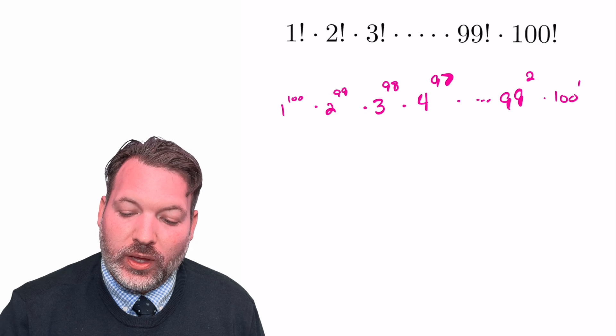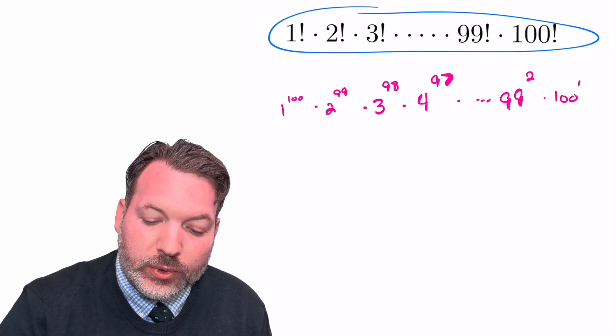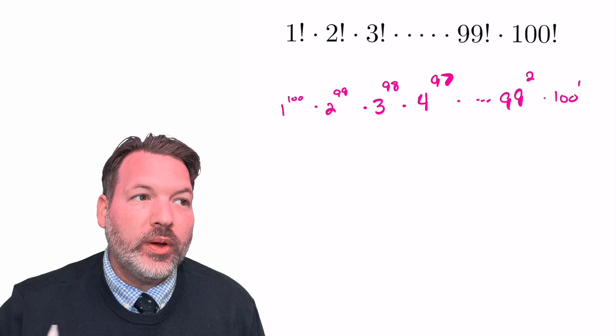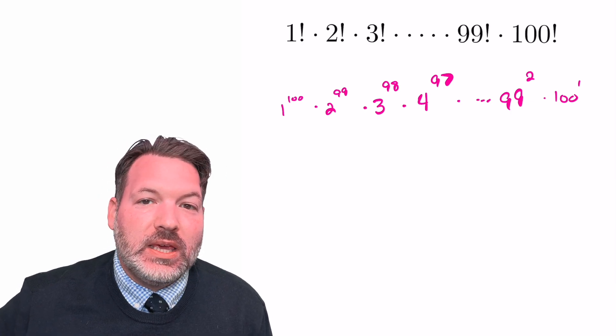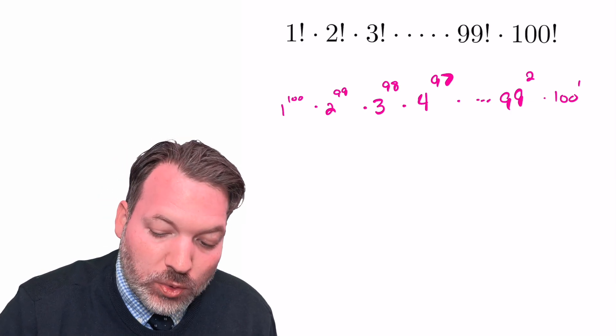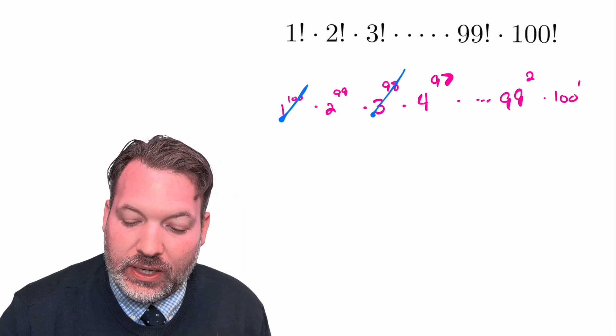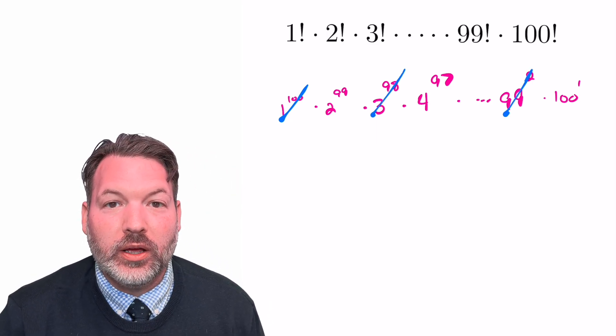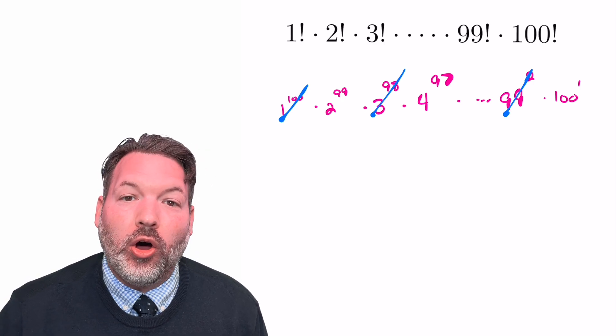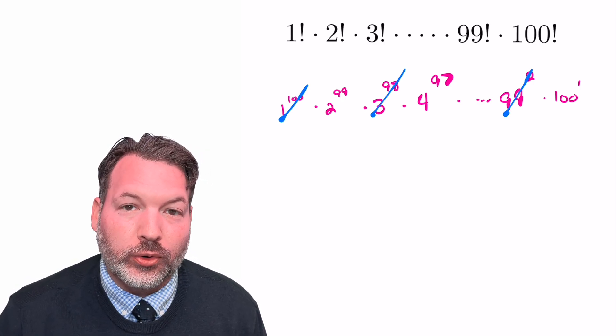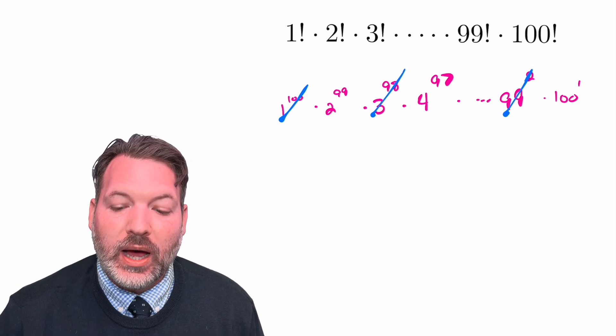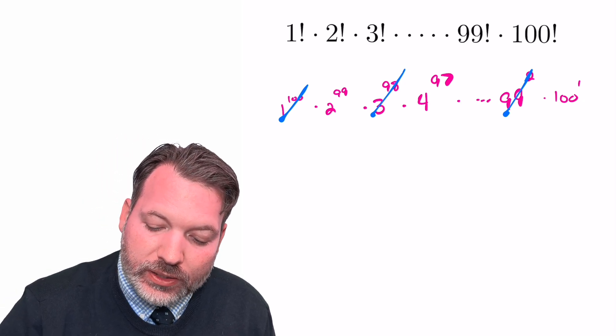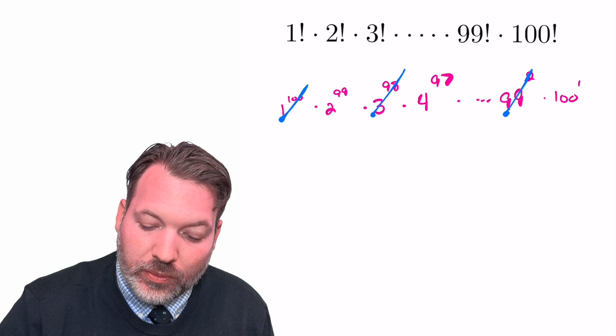What that means for us when we think about which of these factorial numbers we can remove to produce a perfect square is we really don't want to mess with any of the even powers of numbers at all. So this 1 to 100, 3 to the 98th, 5 to the 96th, all the way up to 99 squared, we don't want to mess with those at all. We want all of those numbers represented in our overall factorial product. Those are all the numbers with odd bases. So in fact, what we want to concentrate on now are all the numbers with even bases.